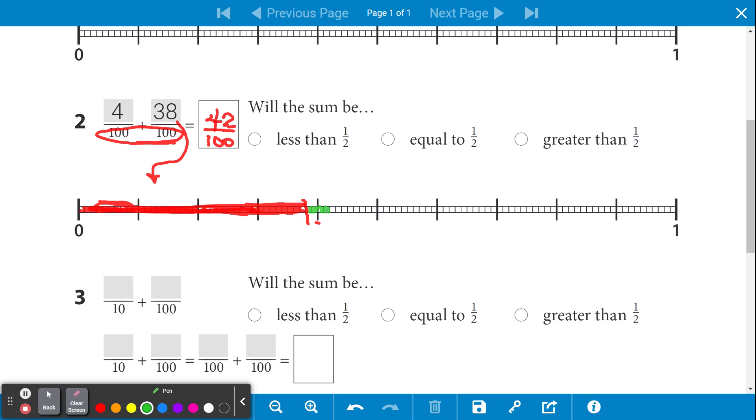Now, to figure out whether this is less than 1 half or larger than 1 half, it would be helpful to identify where 1 half is. So if you count from here, 10, 20, 30, 40, 50 is right here, which is the 1 half.